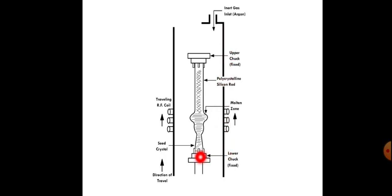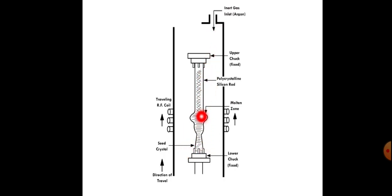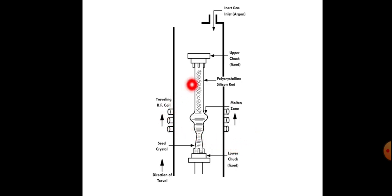An important point is that no unwanted gas or oxygen is present inside. The complete setup has a glass tube enclosure with an inert gas inlet. The silicon rod is fixed in the lower chuck. The seed crystal is fixed and the direction of RF coil travel is upward. This is the summary of the FZ process.